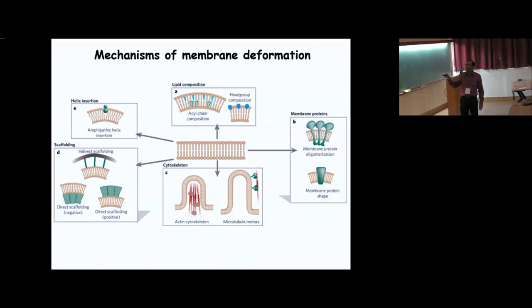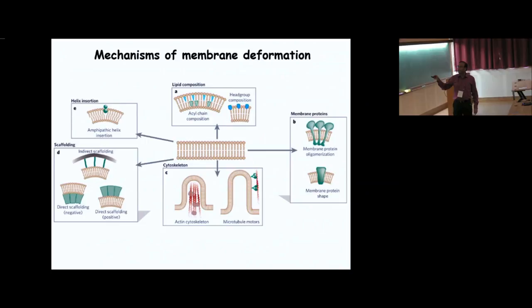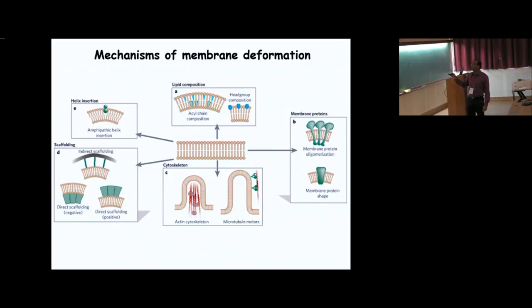Curvature can also be done by scaffolding proteins — either indirect, where a curved protein is attached to the membrane by another protein and imparts its shape, or by direct interaction with lipids on the membrane. There is also actin which can push the membrane and give shape, or microtubules which can stabilize the shape. Additionally, proteins that oligomerize can make curvature, and proteins with different intrinsic shapes can also induce curvature.